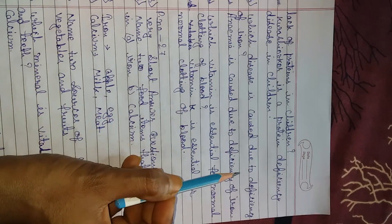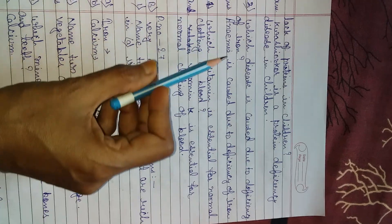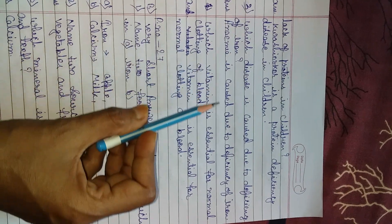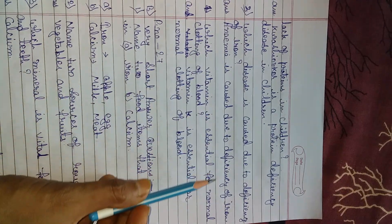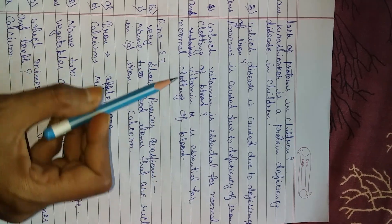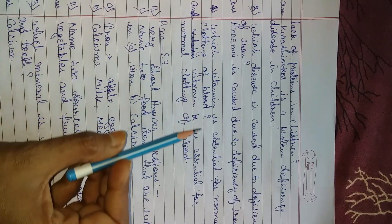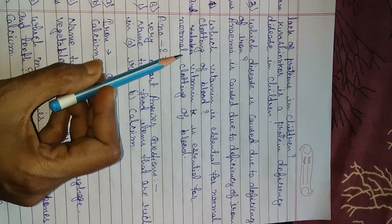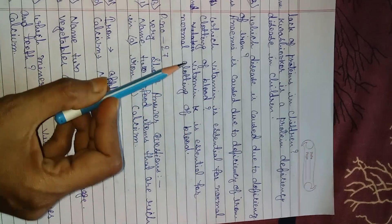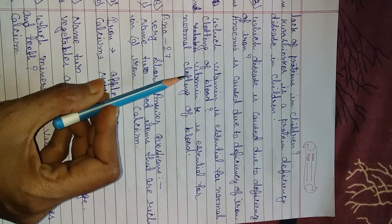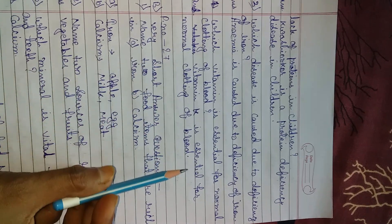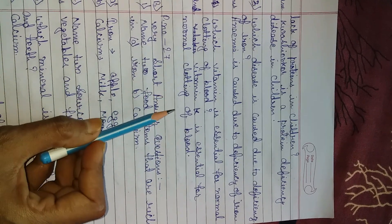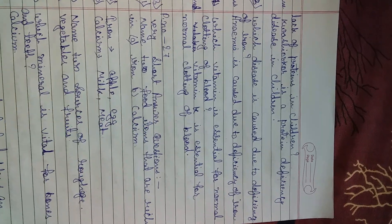Which disease is caused due to deficiency of iron? Anemia is caused due to deficiency of iron. Which vitamin is essential for normal clotting of blood? Vitamin K is essential for normal clotting of blood.